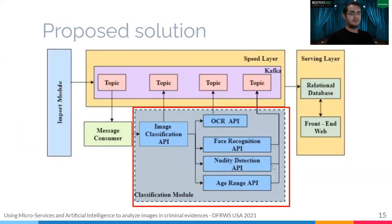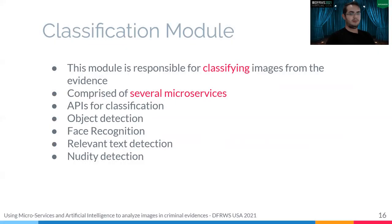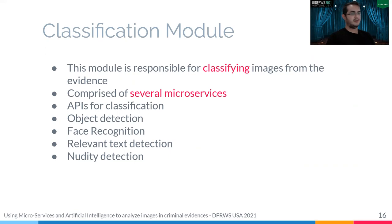The classification model is responsible for classifying images from the evidence and comprises several Microsoft intelligence algorithms, such as APIs for object detection, face recognition, relevant text detection, node detection, and others.